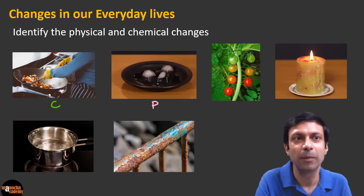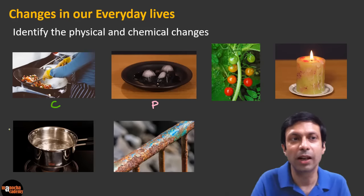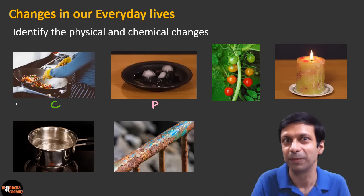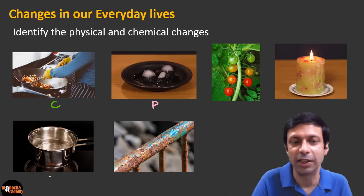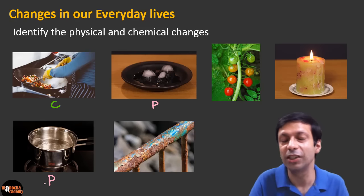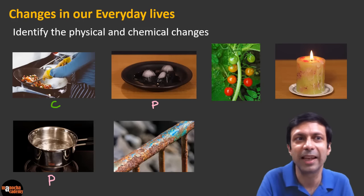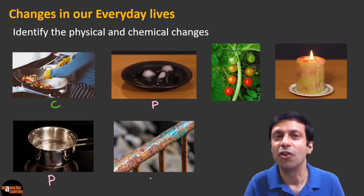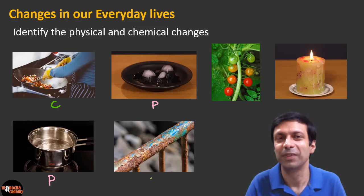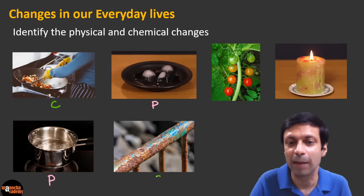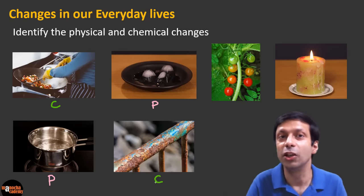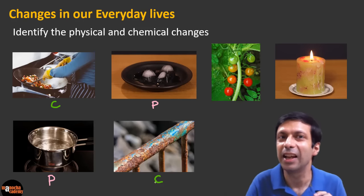Now let's take a look at the picture below. Can you tell whether boiling of water is a physical or a chemical change? It's again a physical change, because water changes into steam and it's reversible. Now let's look at the next picture — here you can see rusting of iron is shown. It's a chemical change because a new substance is formed: iron changes into rust and it's irreversible.